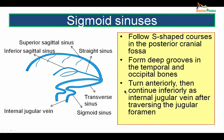The sigmoid sinuses follow an S-shaped course along the posterior cranial fossa, forming deep grooves in the temporal and occipital bones. They turn anteriorly and then continue inferiorly as the internal jugular vein after traversing through the jugular foramen.